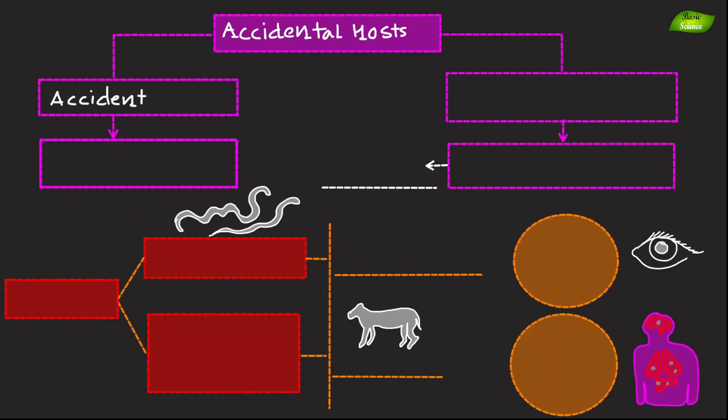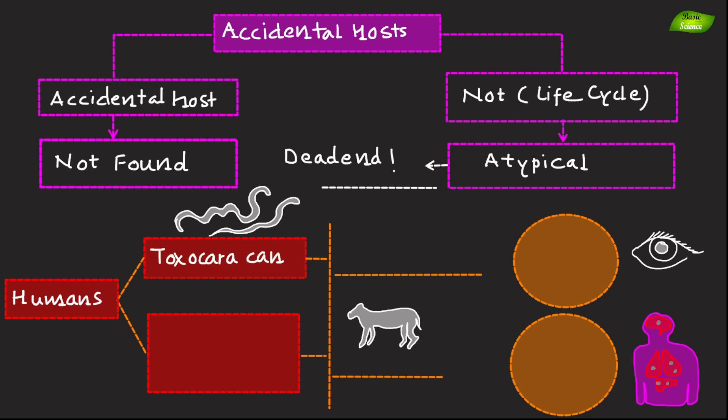Accidental hosts are those in which a parasite is not normally found. These hosts are not typically involved in parasite's life cycle and often experience atypical or dead-end infection. Example is humans for Toxocara canis. Humans can become accidental hosts for Toxocara canis, leading to Toxocariasis, a condition that can cause serious health issues such as vision problems.